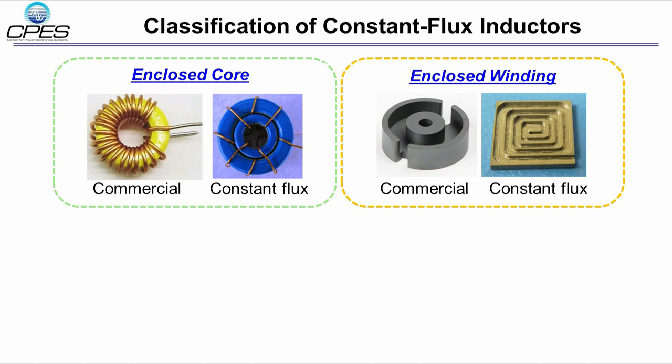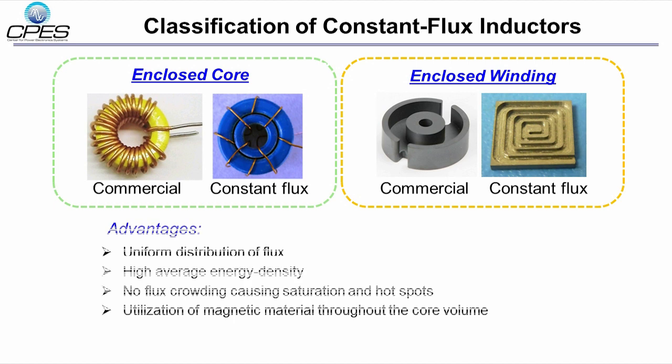Based on the different position of the core and the winding, the inductors can be divided into two categories: enclosed core such as toroids, and enclosed winding such as pot cores. The main objective of both types is to use the gap areas in the center or in the middle that have no energy stored. By making the flux uniform in the core, we can improve the space utilization while keeping the core away from saturation.